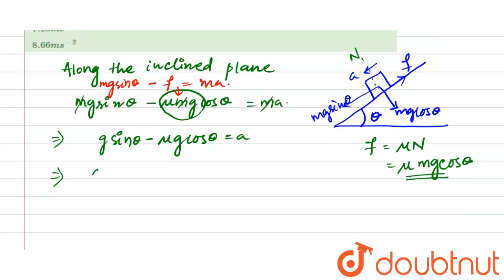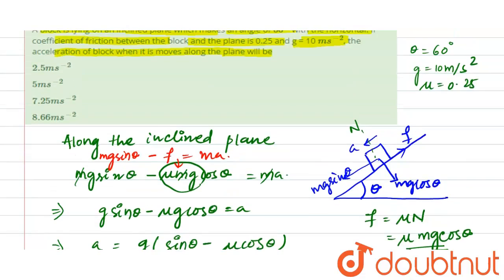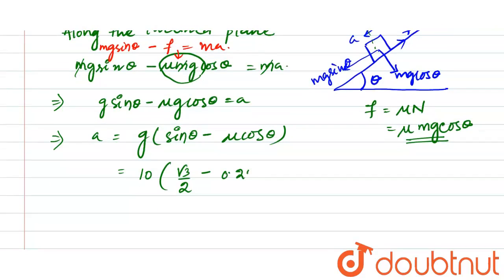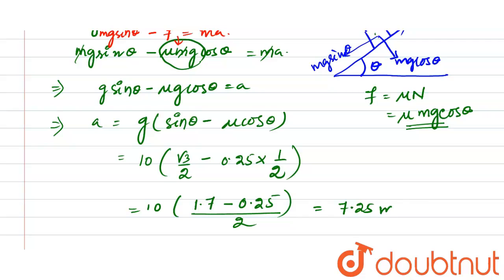So putting in the values: a equals g into (sin theta minus mu cos theta). With theta equal to 60 degrees, g equals 10, sin 60 is root 3 by 2, mu is 0.25, and cos 60 is 1 by 2. So we get 10 into (root 3 by 2 minus 0.25 divided by 2). Using the value of root 3 as 1.7, this gives 10 into (0.85 minus 0.125), which equals 10 into 0.725, giving 7.25 meter per second square.